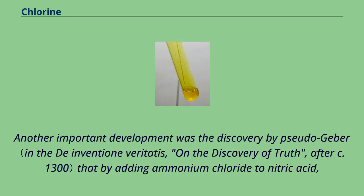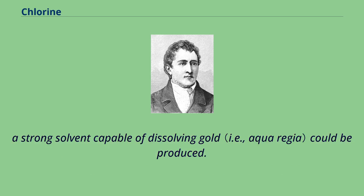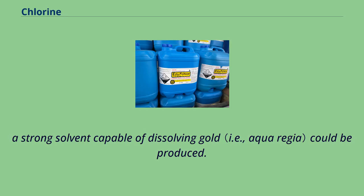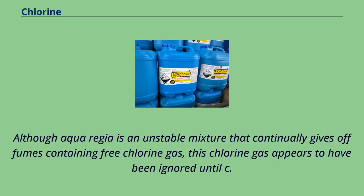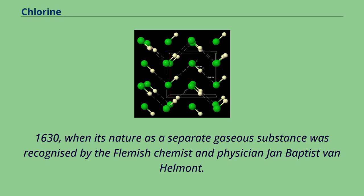Another important development was the discovery by Pseudo-Geber that by adding ammonium chloride to nitric acid, a strong solvent capable of dissolving gold could be produced. Although aqua regia is an unstable mixture that continually gives off fumes containing free chlorine gas, this chlorine gas appears to have been ignored until around 1630, when its nature as a separate gaseous substance was recognized by the Flemish chemist and physician Jan Baptist van Helmont.